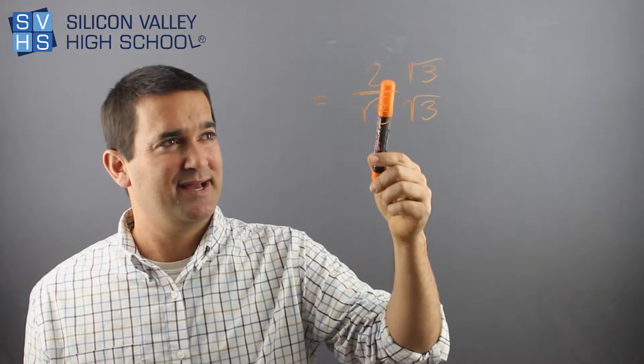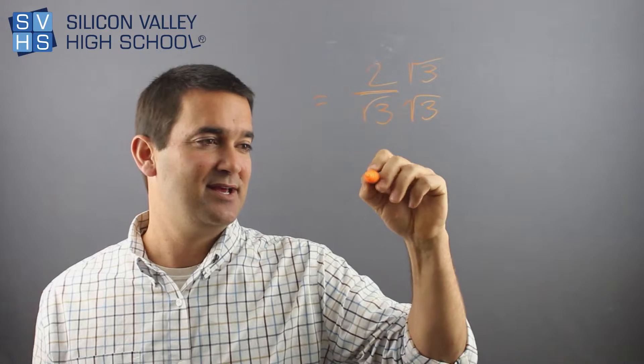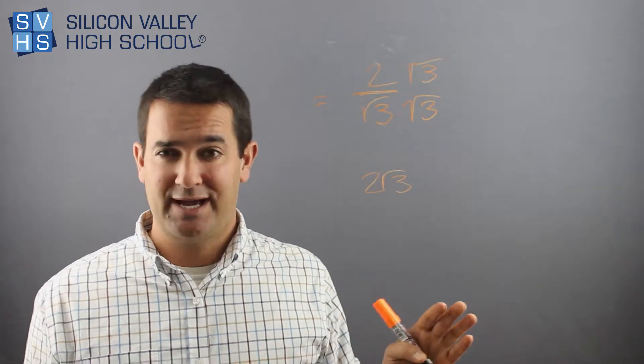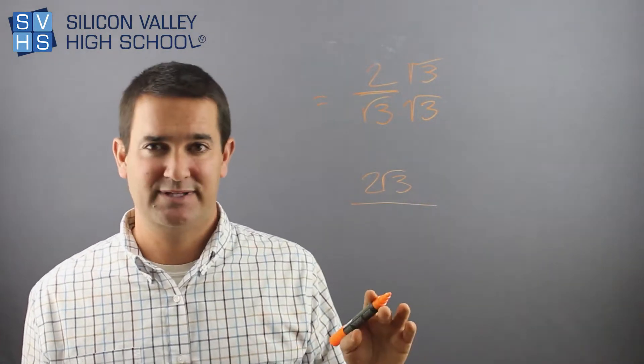And then this comes down to like do I know how to multiply a whole number times a root? The good news for you is you don't do much. The answer is 2 root 3. 2 times root 3, 2 root 3. 6 times root 11, 6 root 11.